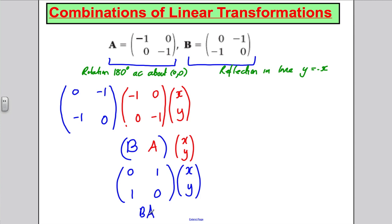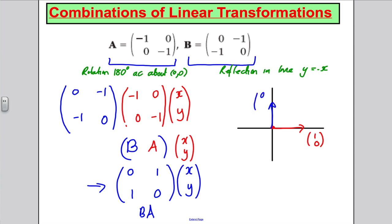What is the effect of matrix BA? I'll see where (1, 0) and (0, 1) go. The vector (1, 0) goes to the first column of BA, which is (0, 1) — 0 across, 1 up. And (0, 1) goes to (1, 0). So the i and j vectors — calling them little a and little b — seem to have swapped their positions.